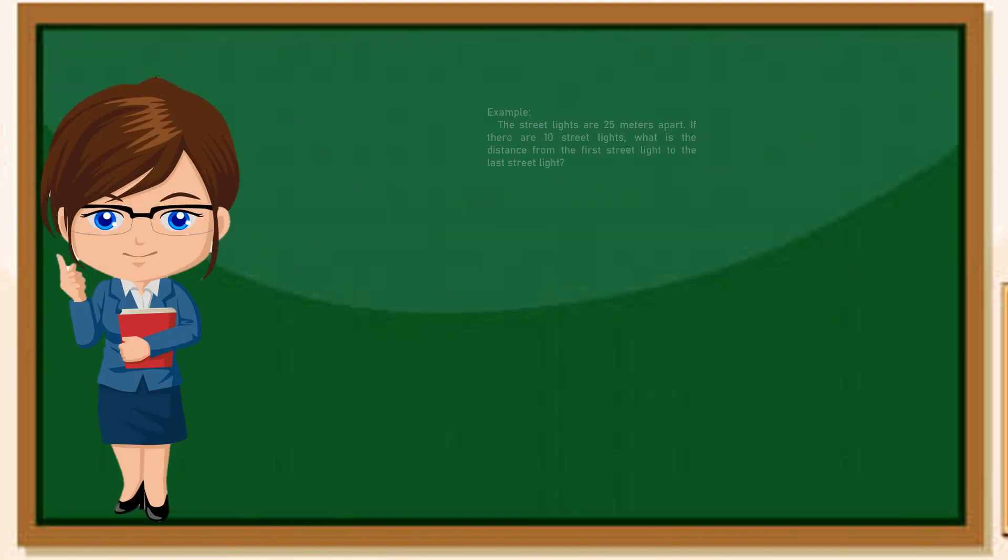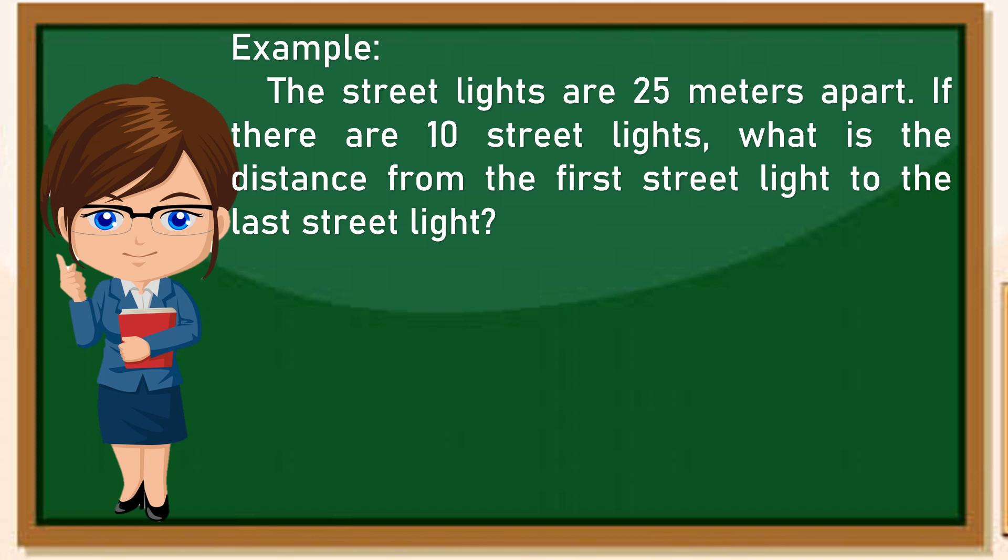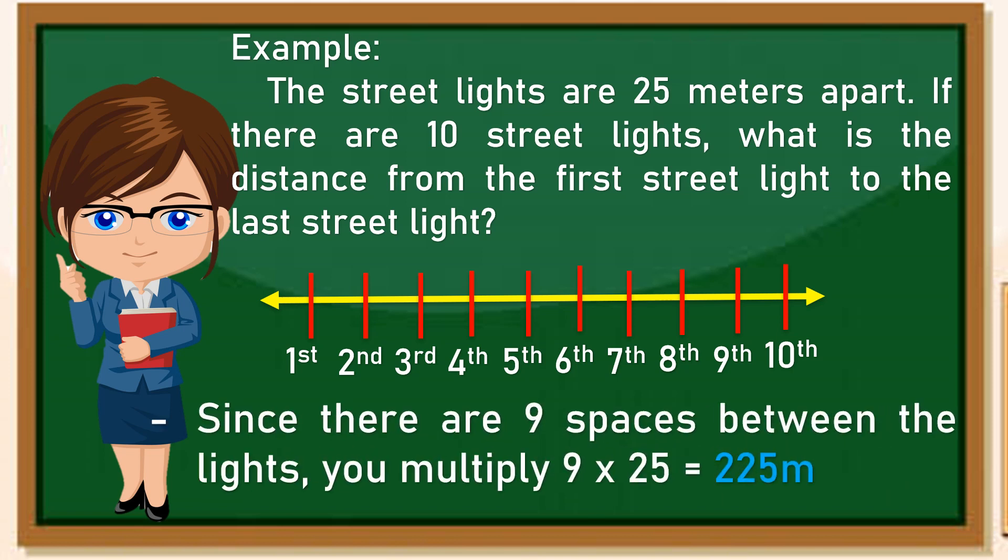For example: The street lights are 25 meters apart. If there are 10 street lights, what is the distance from the first light to the last street light? Paano natin ito is-solve? So pwede tayong gumamit ng number line. So suppose ito ang number line at ang bawat line ay mag-represent sa street lights. So meron tayong first hanggang ten. Bibilangin mo ang space or pagitan sa bawat post. So merong nine spaces sa pagitan ng bawat light.